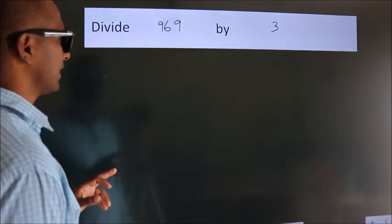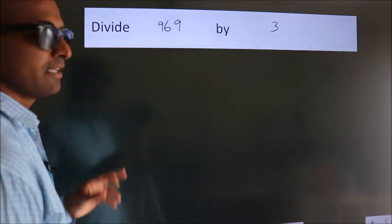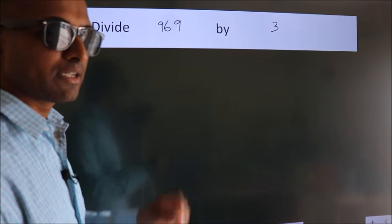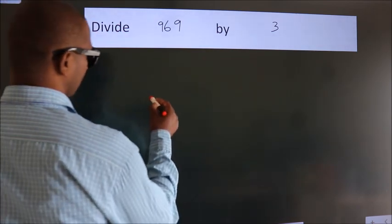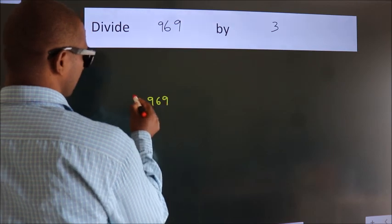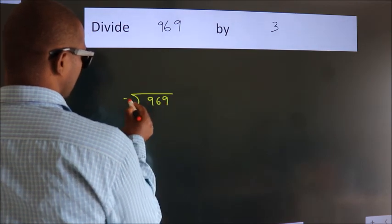Divide 969 by 3. To do this division, we should frame it in this way: 969 here, 3 here.